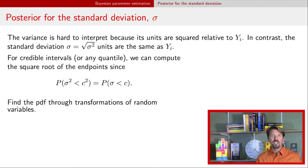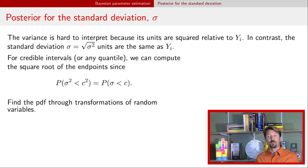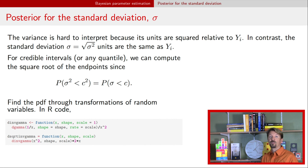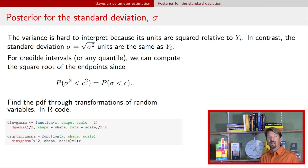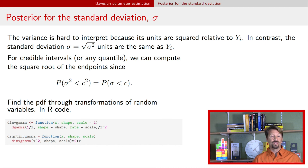We'll also use the density for the standard deviation, which is the density for the square root of an inverse gamma random variable. Using transformation of random variables — beyond the scope of this video — we can find the PDF for this square root of an inverse gamma. In R code, one function finds the density for the inverse gamma and a second finds the density for its square root. That covers all the mathematics behind default Bayesian inference in a normal model; the next video walks through a real-world example using all these formulas.